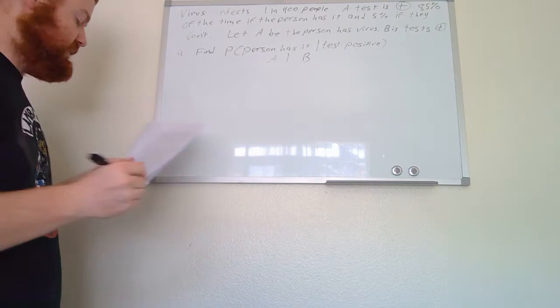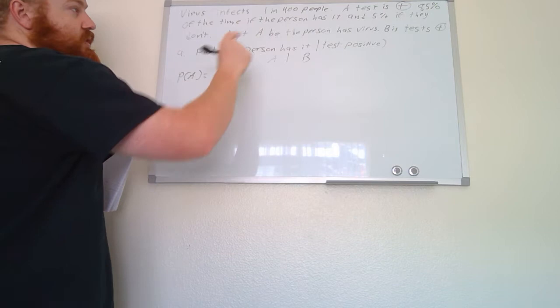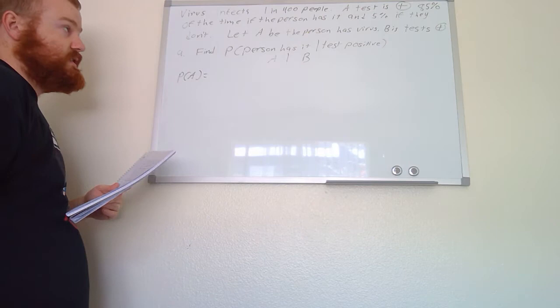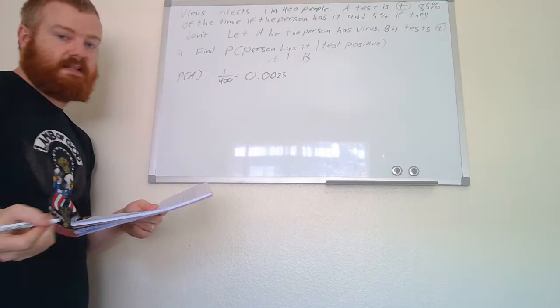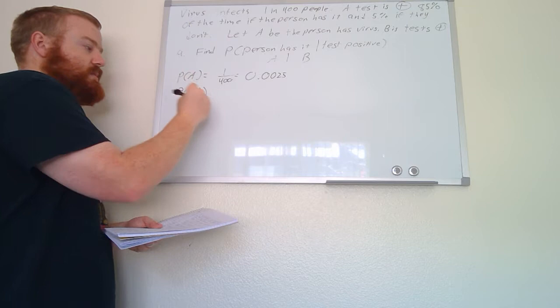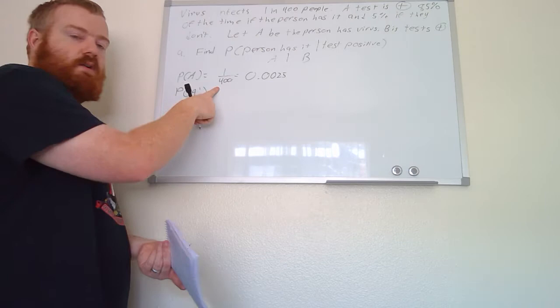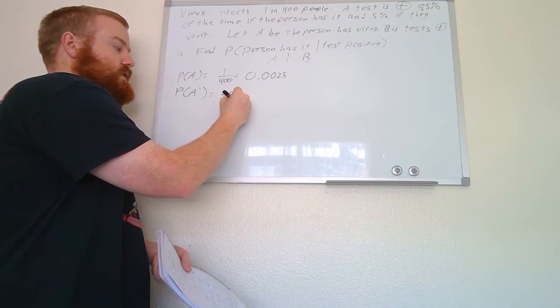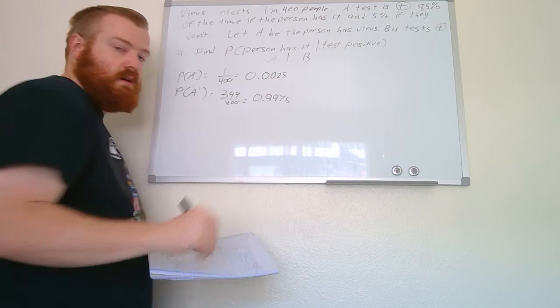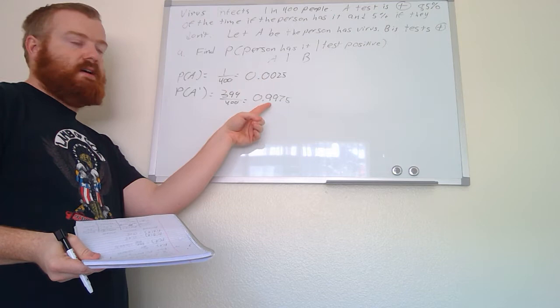Let's write down the values we know. The probability of A — that the person actually has the virus — is one out of 400, which equals 0.0025. Therefore the probability of A complement, meaning the person doesn't have the virus, is 399 out of 400, which equals 0.9975. We could also take 1 and subtract 0.0025 to get the same decimal.